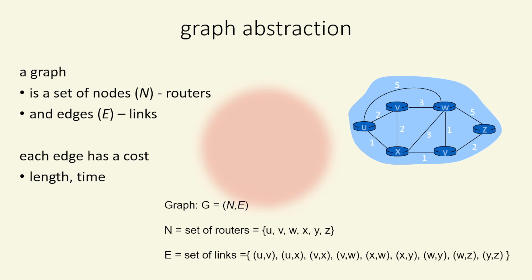And here we can say that each edge has a cost. It could be a length of time for a packet. It could be some type of distance. And technically, we have a graph, which is nodes and edges. And our nodes, which are routers, are U, V, W, X, Y, and Z. And then we have our links between them. So we can use a graph abstraction to calculate what we want to do with our network in real life.